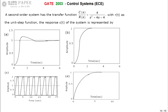We are discussing the 2003 ECE paper. A second-order system has a transfer function of 4 divided by s-squared plus 4s plus 4, with input as a unit step. The response of the system is given with a graph. Find the right response for the given system — four options are provided.